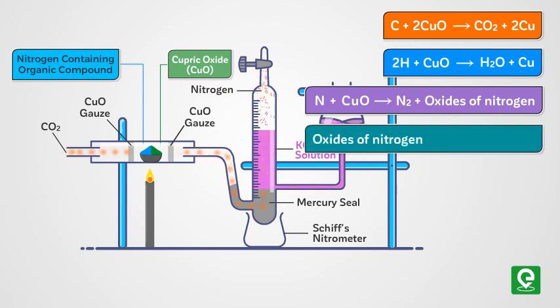The carbon and hydrogen in the compound are oxidized to carbon dioxide and water respectively, while nitrogen is set free. Any oxide of nitrogen produced during this process is reduced back to free nitrogen by a heated copper gauze.